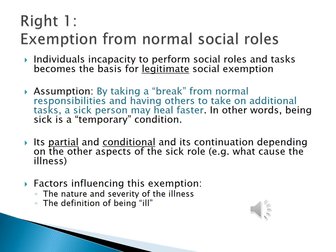There are four aspects of the sick role model. The first aspect is that if you can claim the sick role, you are exempted from normal social role responsibilities. In other words, the society recognizes that if you are unable to perform your normal social roles and tasks, you can have a legitimate social exemption. From Parsons' perspective, these exemptions are granted not for the sake of the patient, but for the sake of the society as a whole — to ensure that the sick person may heal faster and better, and thus return to their full responsibilities as soon as possible.